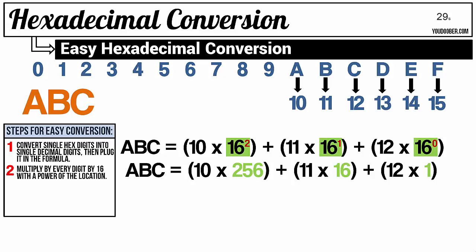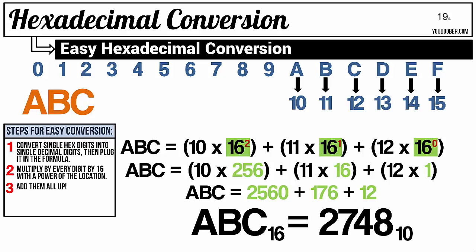Further along, we continue working the multiplication and we end up with ABC equals 2560 plus 176 plus 12. We just add those up, and we get the hexadecimal number ABC equals 2748 in decimal. That's all there is to it.